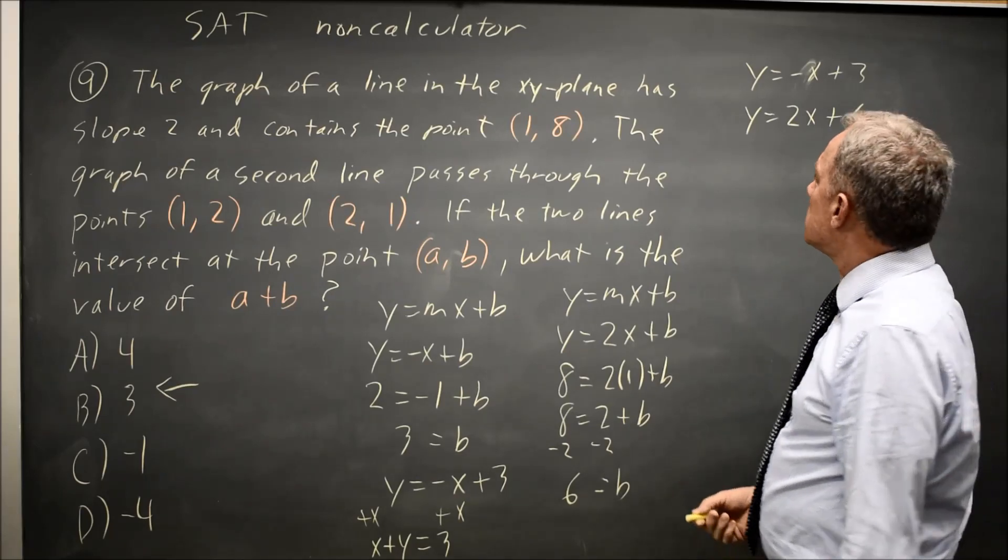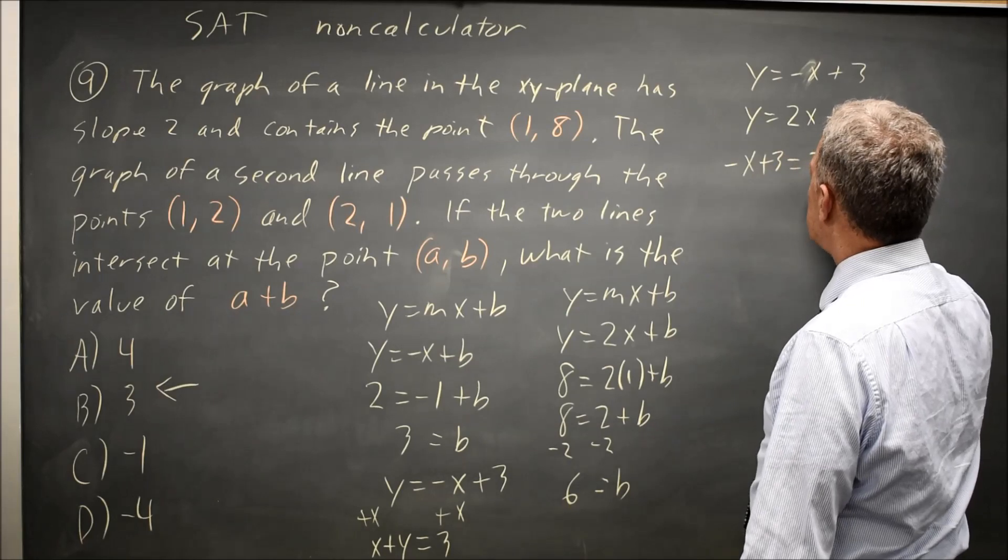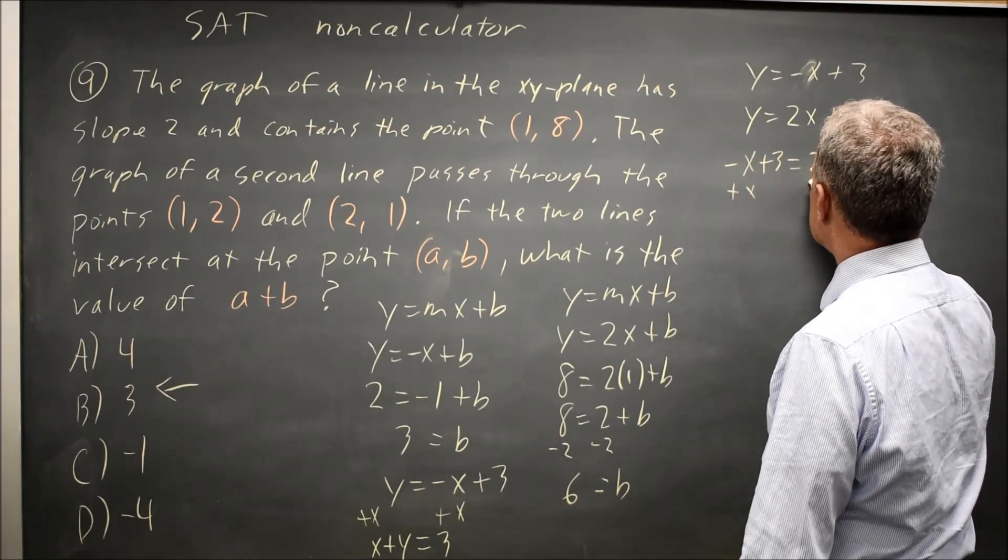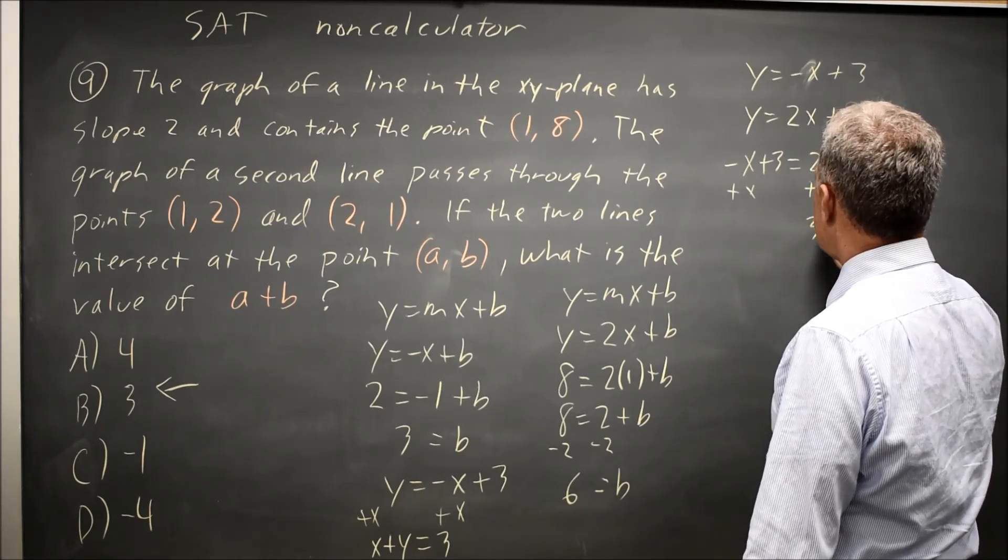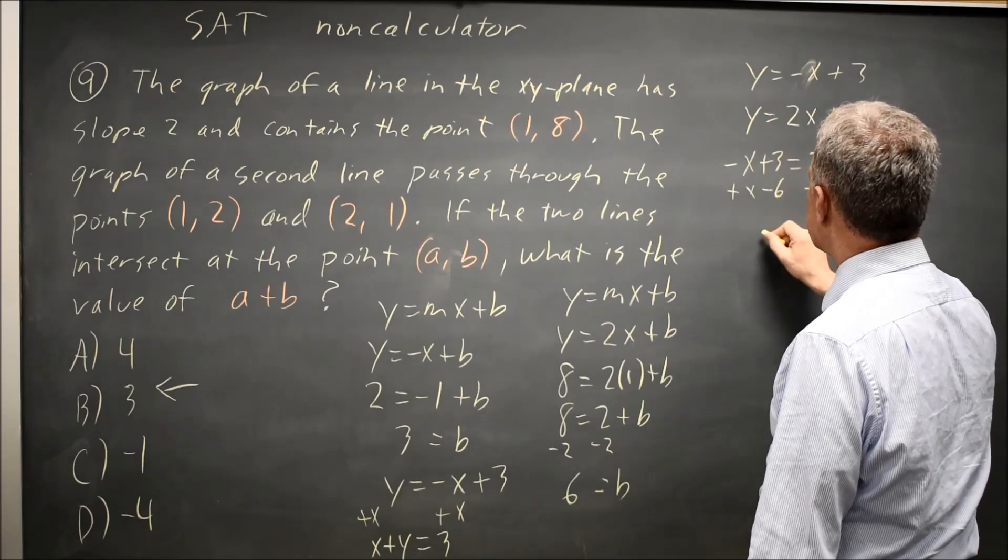Since they're intersecting, the two expressions are equal. Negative x plus 3 equals 2x plus 6. Add x to both sides, and I get 3x. Subtract 6 from both sides, and I get 3 minus 6 is negative 3.